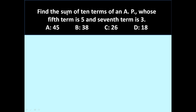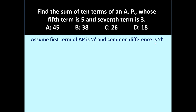Now let us take one more problem: find the sum of 10 terms of an AP whose 5th term is 5 and 7th term is 3. We have to find the sum of 10 terms given that the 5th term is 5 and the 7th term is 3. Assume the first term of the AP is A and the common difference is D. To find the sum, our formula is Sn equals n by 2 into (2A plus (n minus 1) into D), so we need the values of A and D.